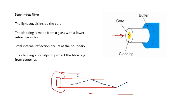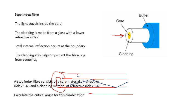So basically, if there's the core, and there's the cladding, then light inside the core would reflect internally like that. Because this material here has a lower refractive index. Total internal reflection occurs at the boundary, and the cladding also helps to protect the fibre, for example, from scratches, as does the buffer, and the buffer will stop other light getting into the fibre.